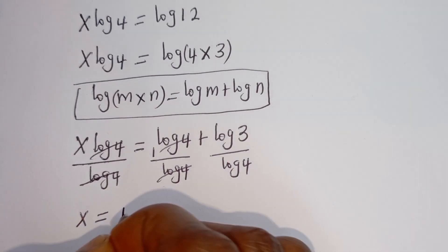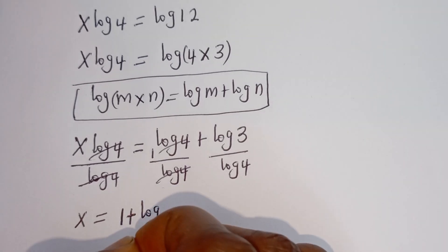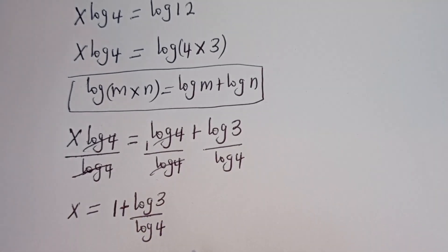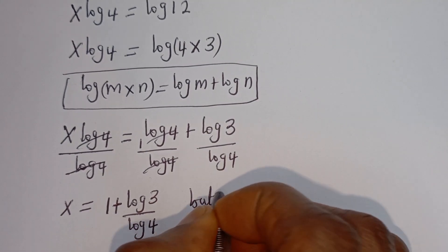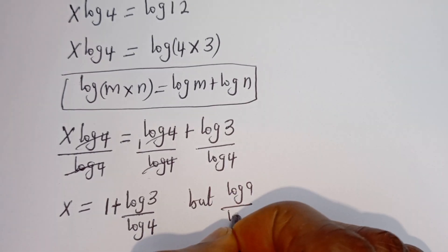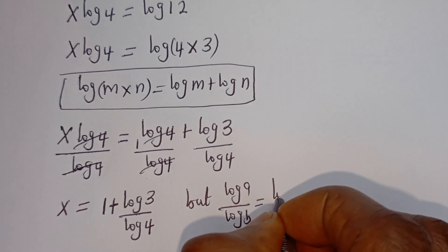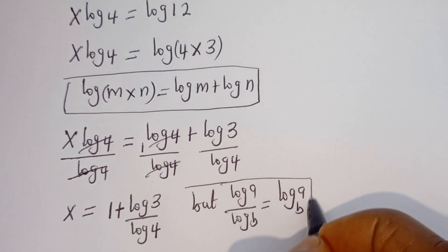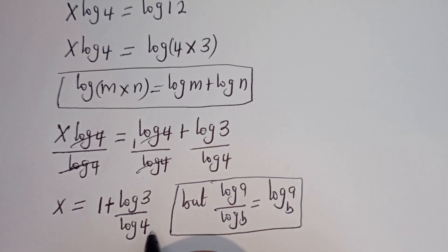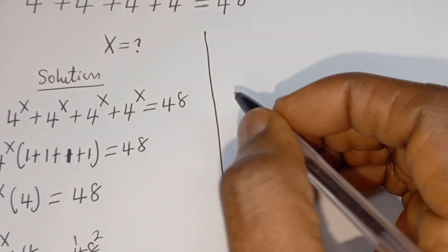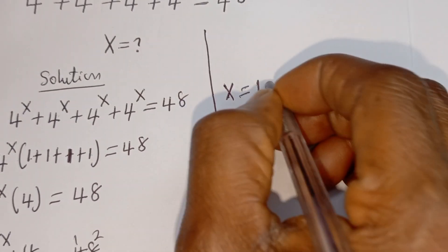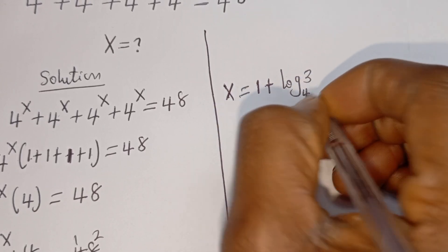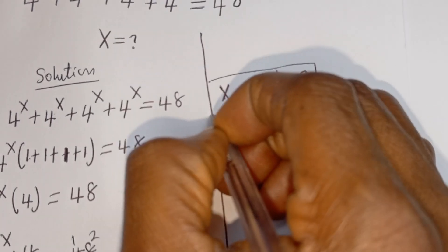We get S is equal to 1 plus log 3 over log 4. But take note that log A over log B is equal to log B base A — that is, log base B of A. Therefore the whole expression can be written as S is equal to 1 plus log 3 base 4, and this is the final answer.